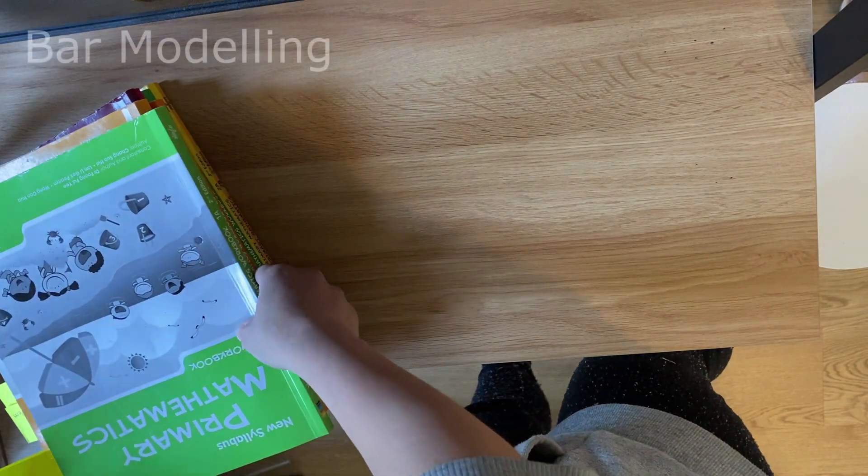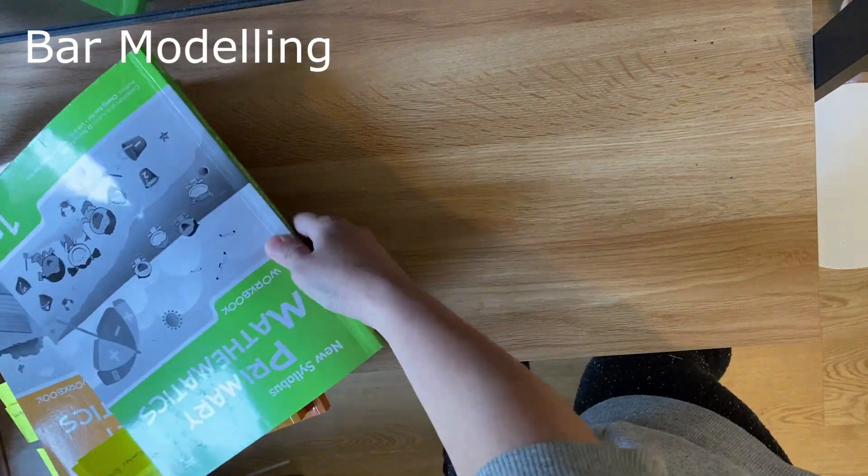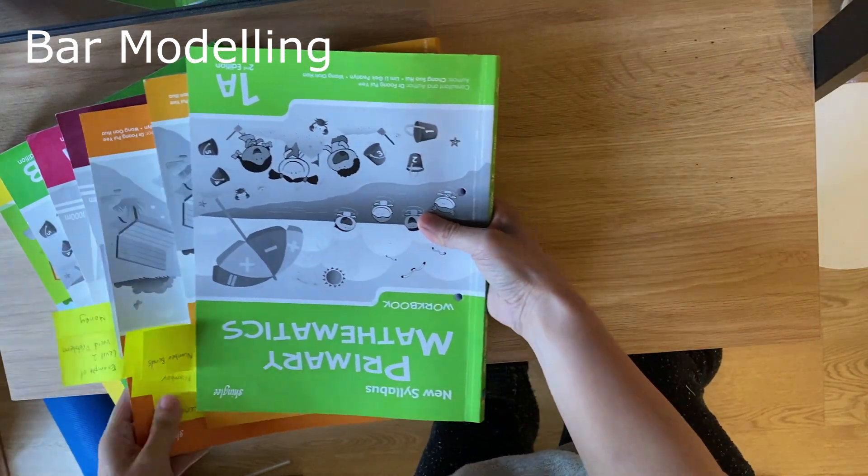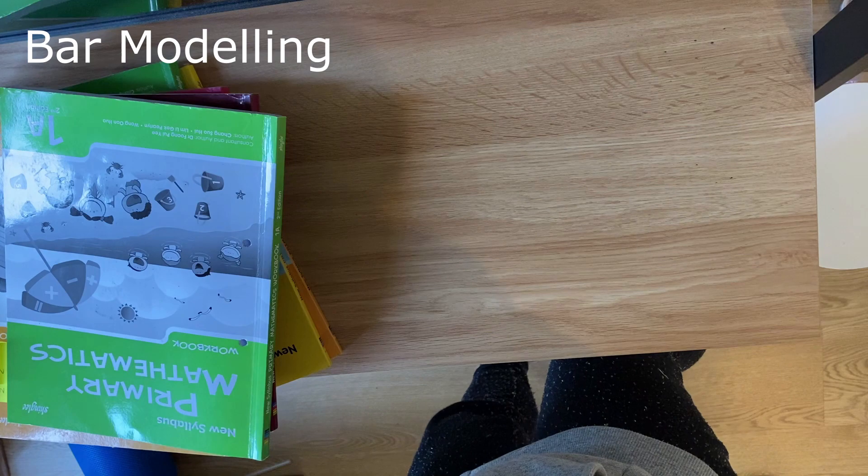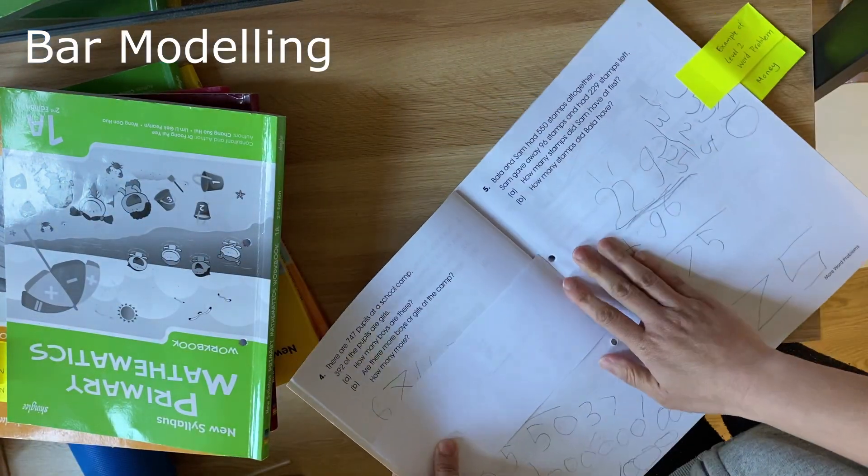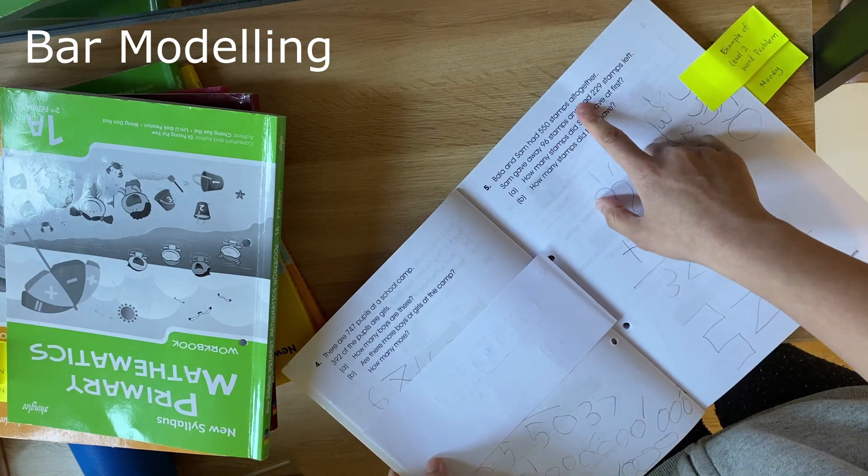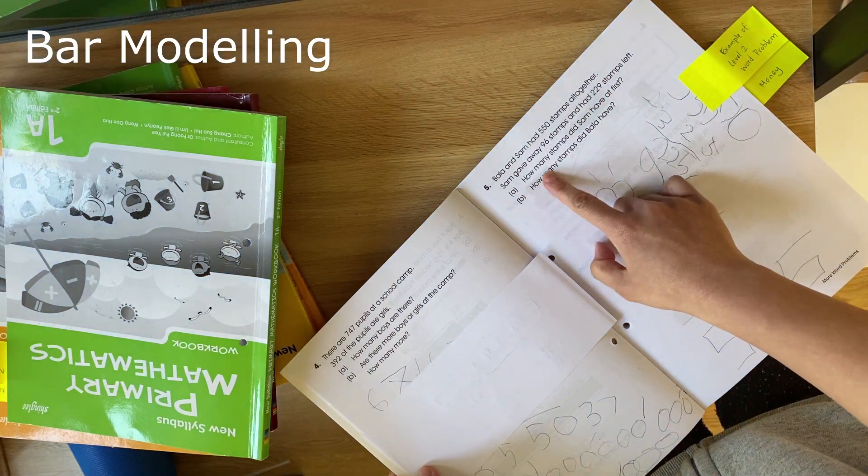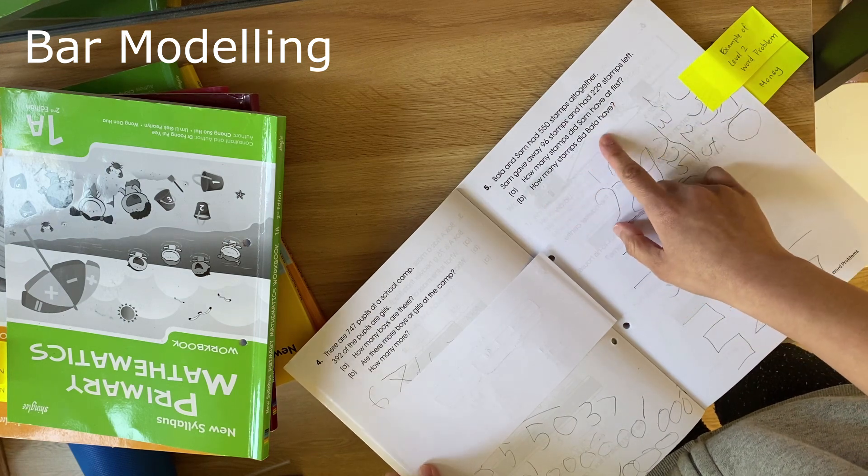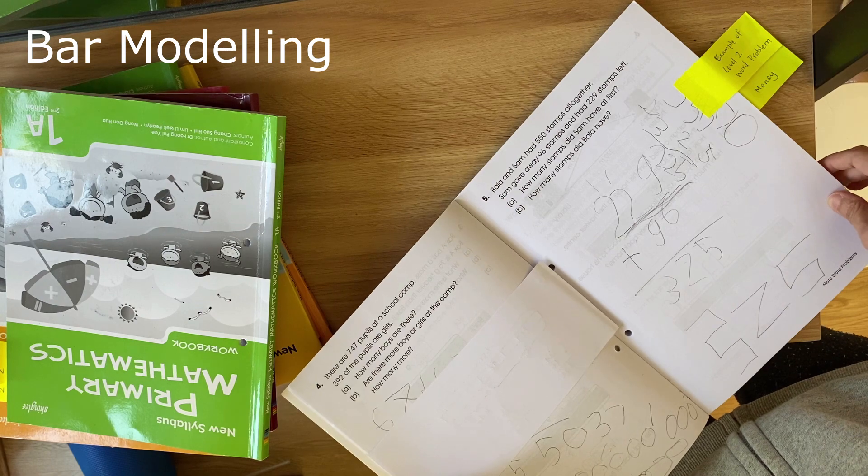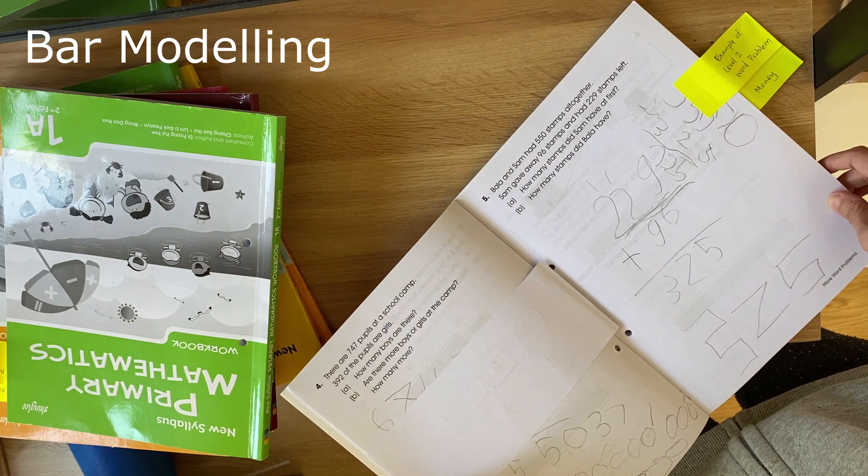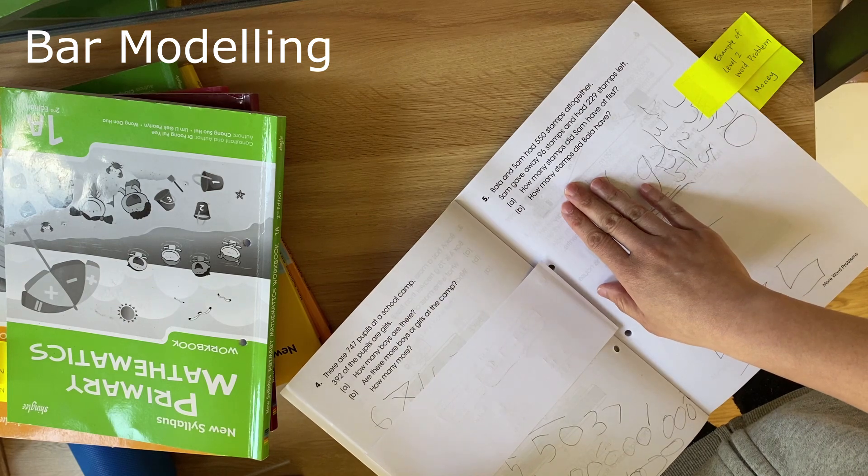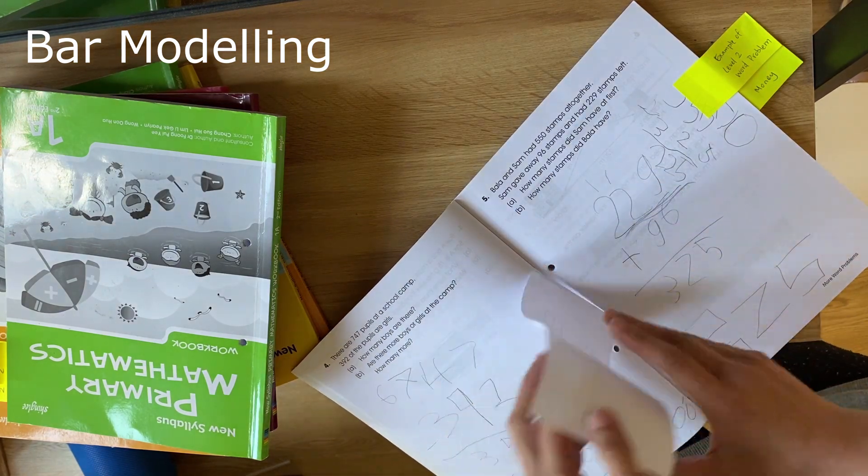I'll show you what I mean by bar modelling in level 2B. Okay, so here's a question. Bala and Sam had 550 stamps altogether. Sam gave away 96 stamps and had 229 stamps left. So first, how many stamps did Sam have at first? And then how many stamps did Bala have? So when I'm looking at this question, I immediately think algebra, and then I think, isn't that a high school thing? Why are they expecting primary school students to do this? So with the Singapore curriculum, they introduce primary students to these sorts of questions and they use bar modelling to get the answer.